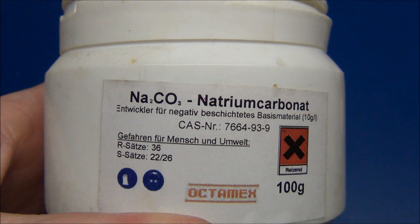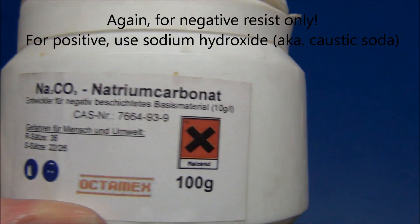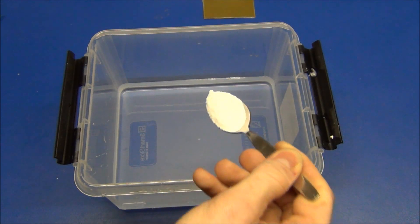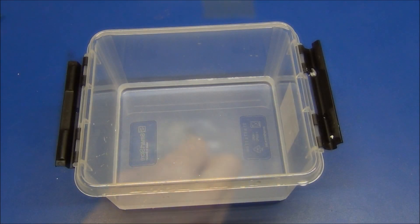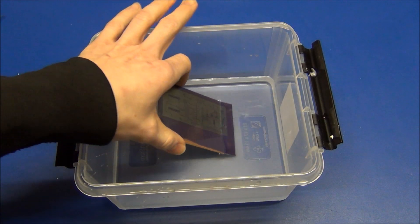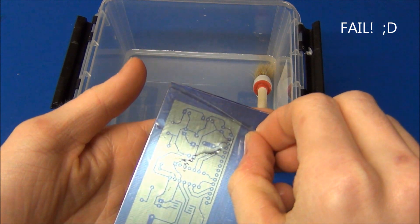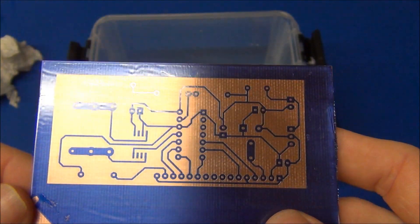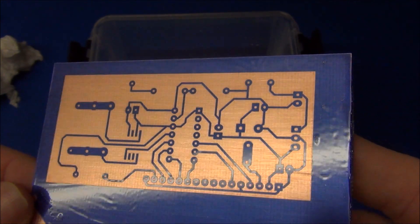Now develop the board in a solution of sodium carbonate, also called natrium carbonate. You want to use 10 grams per 1 liter of water. Place your board in the container and keep the solution moving back and forth over the board. Do remember to remove the film from the photoresist. Once all the photoresist has been removed, clean your board with water and the final result should look like this.